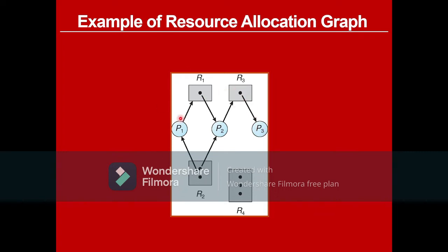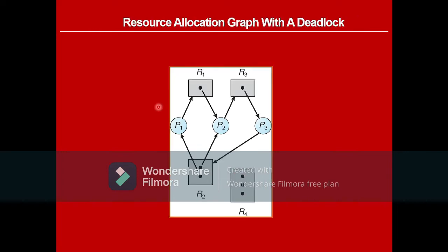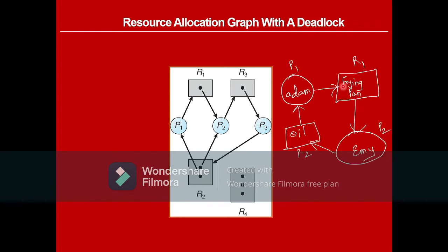This is how a resource allocation graph is drawn. Now let's look at a resource allocation graph with a deadlock. In this example we have two processes — P1 (Adam) and P2 (Amy) — and two resources: R1 (frying pan) and R2 (oil). Both want to make breakfast and need a frying pan and oil for cooking.